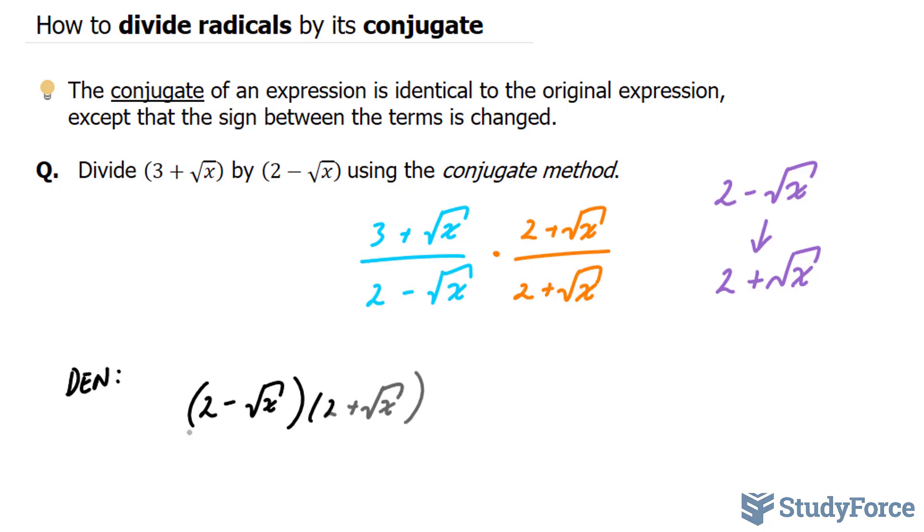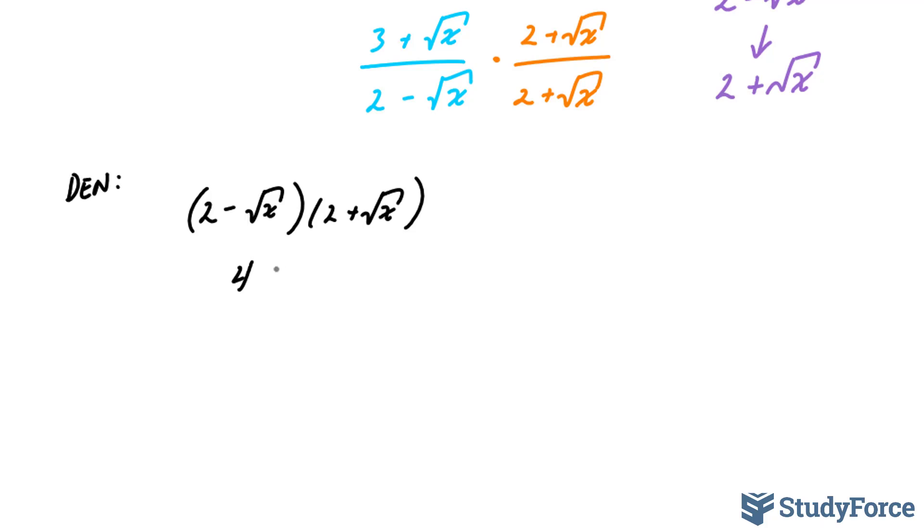This times this: 2 times 2 is 4. 2 times the square root of x is positive 2 square root of x. This times that gives us negative 2 square root of x. And this term times that term, we have 2 square roots being multiplied, that gives us minus x. These two terms are opposite of each other, so they cancel out. 4 minus x is our final denominator.